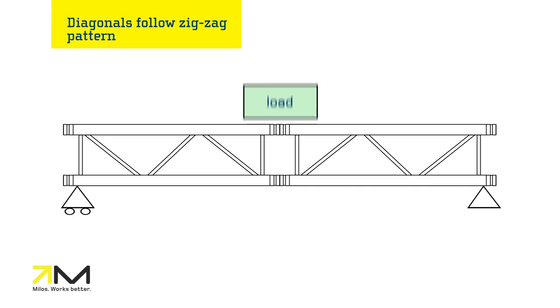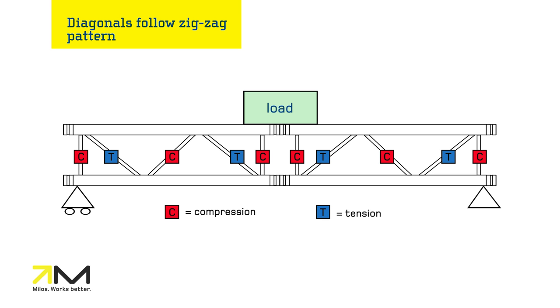In this example, the diagonals follow the zigzag pattern. The vertical upright end braces absorb equally the center point load. Diagonals under compression are indicated with the C and those under tension with a T.